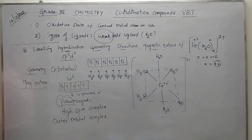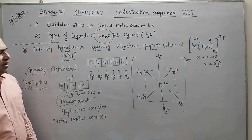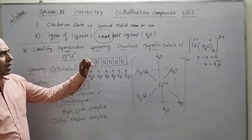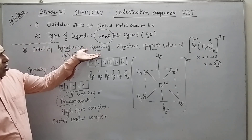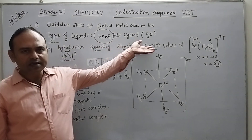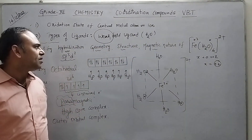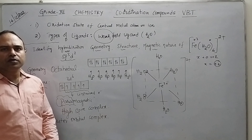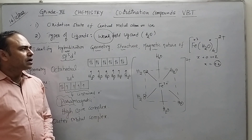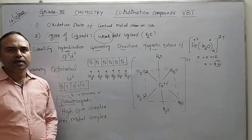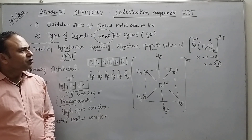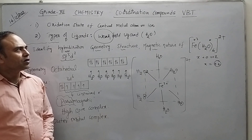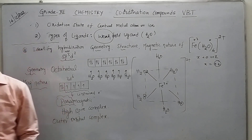So now you can understand how to draw the structure, find the hybridization, geometry, and magnetic nature very easily. In the next class we will complete the remaining structures. With this we conclude VBT. Thank you so much.